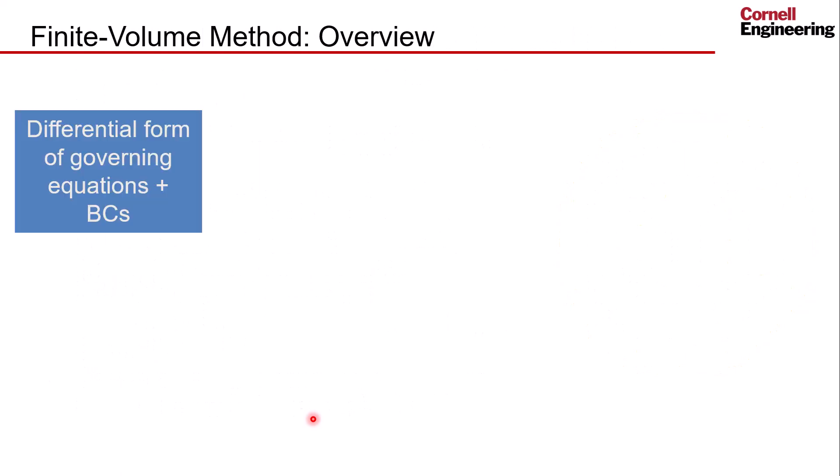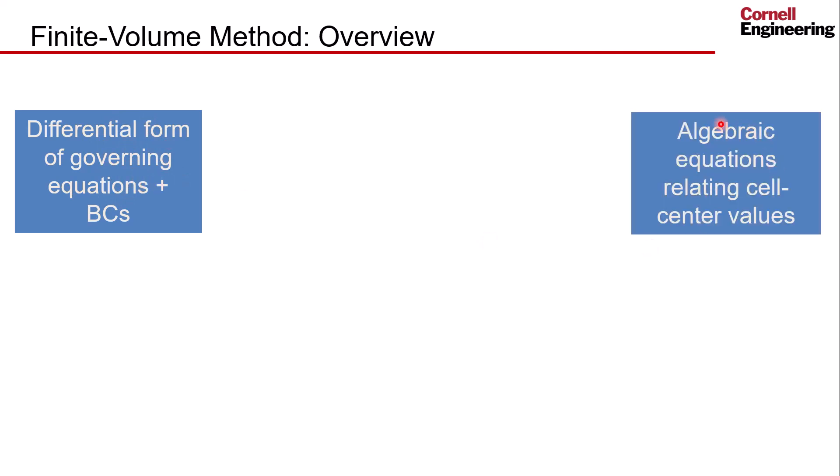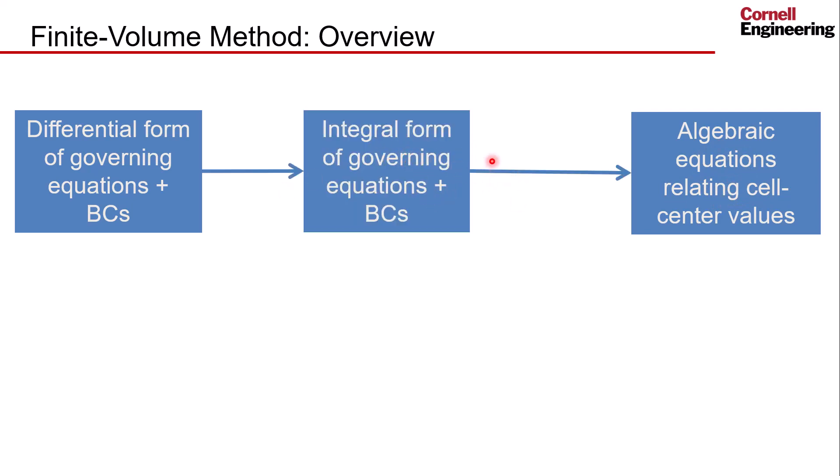The other way to look at the finite volume method: we start off with the differential form of the governing equations and boundary conditions. The solver actually generates algebraic statements of conservation—algebraic equations relating cell center values. For that, it will go to the integral form of the governing equations and apply that to each control volume to get the algebraic statements of conservation. In the process, we introduce a discretization error, which we can minimize by refining the mesh.